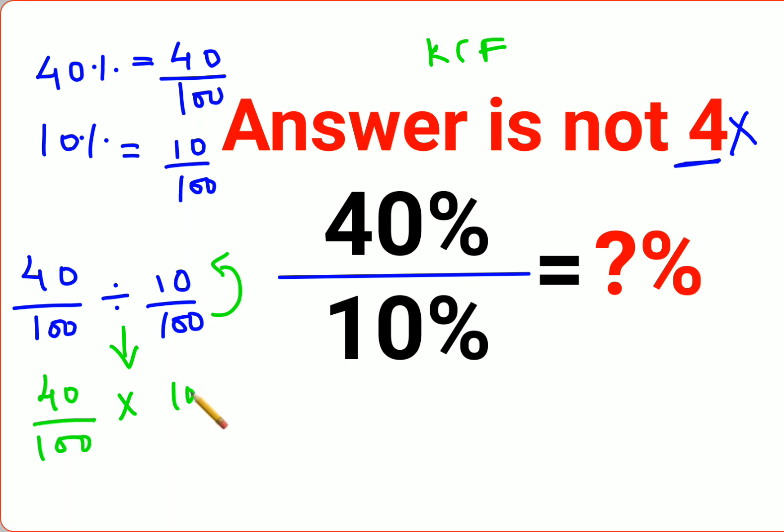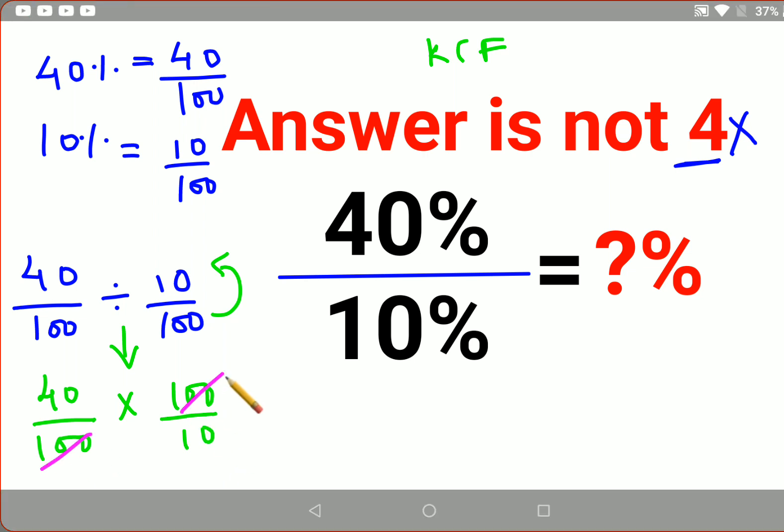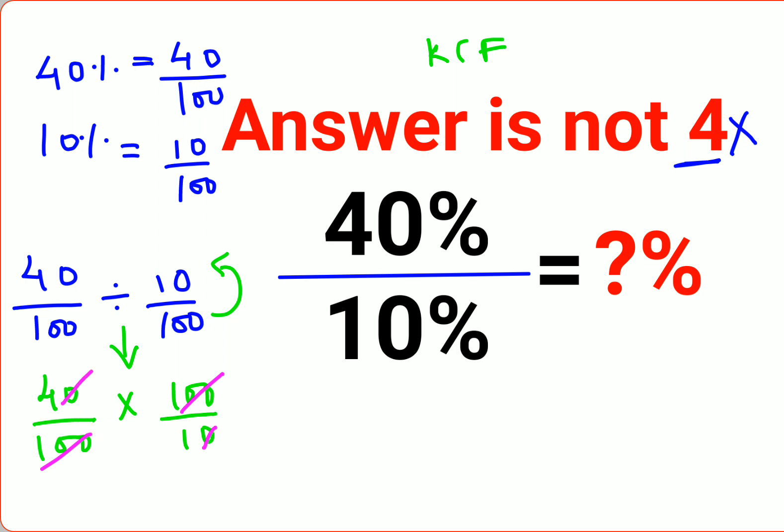So we flip 10 upon 100 as 100 upon 10. Now these things get cancelled, and here this also gets cancelled. You get the answer as 4.